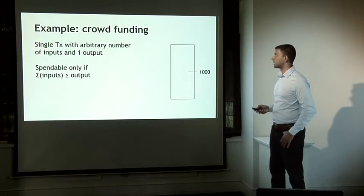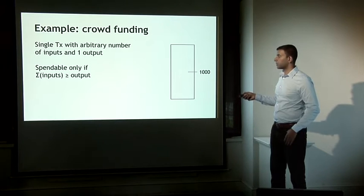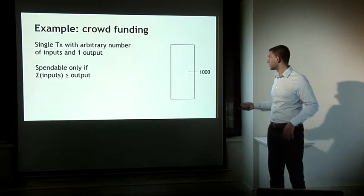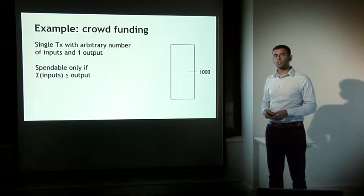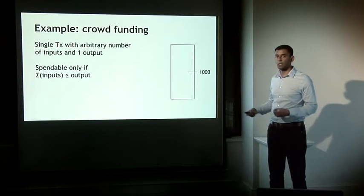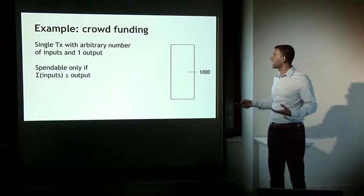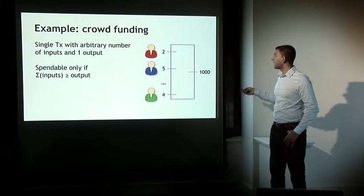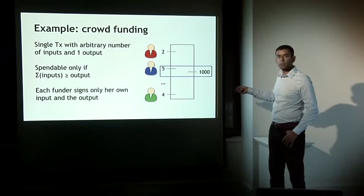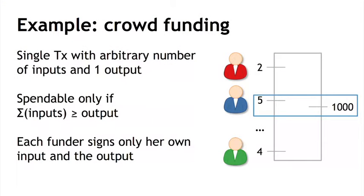Here's how we can accomplish that technically using just Bitcoin. The entrepreneur will create a single transaction with an arbitrary number of inputs and a single output — say a value of 1000 — and send it around to collect contributions. Any Bitcoin transaction is spendable only if the sum of inputs is greater than the sum of outputs. This transaction will gradually accrue signatures from people contributing different amounts, and each party will only sign her own inputs and the overall output, using some little-used features of Bitcoin.